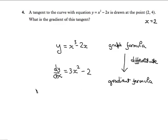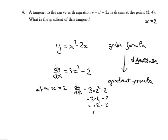So the next stage is to say, when x equals 2, dy by dx - that's the gradient - and we substitute 2 for x. So it's 3 times 2 squared minus 2. That gives us 3 lots of 4 minus 2. That's 12 minus 2, which gives us 10.